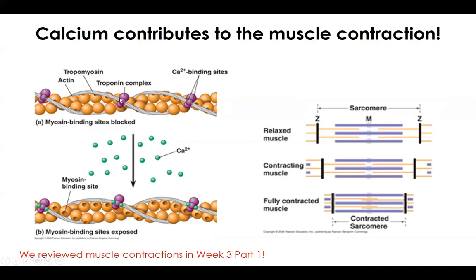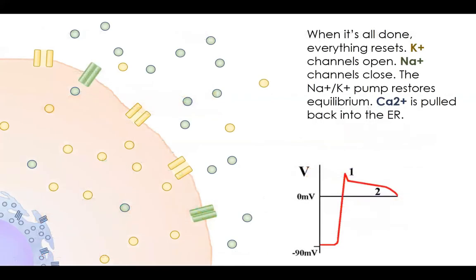On the troponin complex there are sites where calcium can attach. When we get ready to contract, the calcium recently freed from the sarcoplasmic reticulum into the cytosol attaches to troponin. This causes the whole troponin-tropomyosin complex to move out of the way, exposing the myosin binding sites. Myosin can then attach, go through the power stroke cycle, and fully contract the sarcomere. When finished, calcium is pulled back into the sarcoplasmic reticulum to relax the muscle.